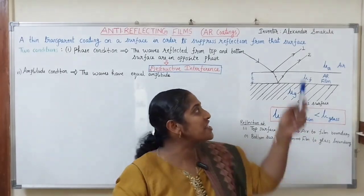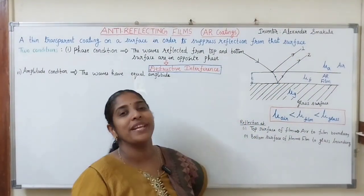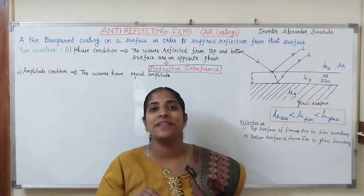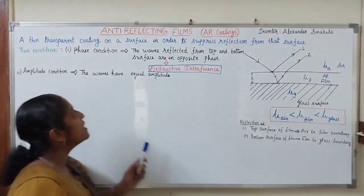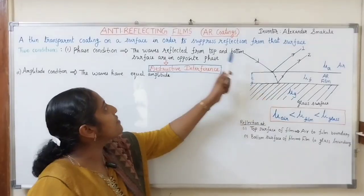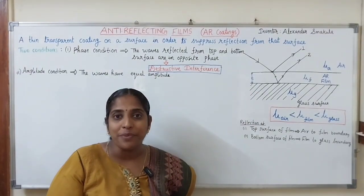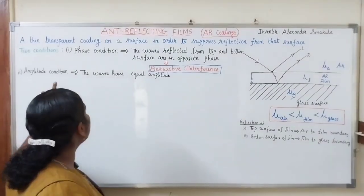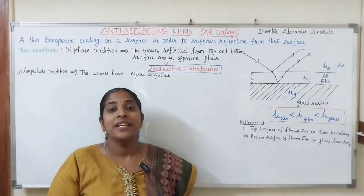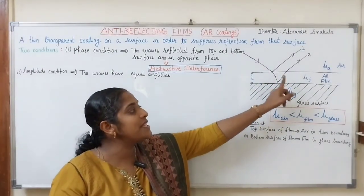Now, to minimize the reflection, we want destructive interference. To produce destructive interference in this reflected system, the AR film must obey two conditions. The first condition is the phase condition — that is, the waves reflected from the top and bottom surfaces are in opposite phase. The second condition is the amplitude condition — that is, the waves have equal amplitude.